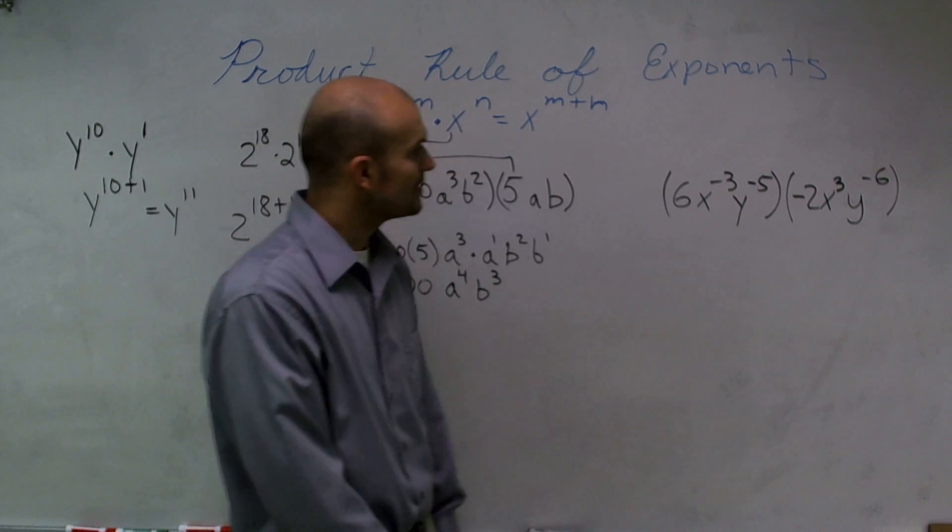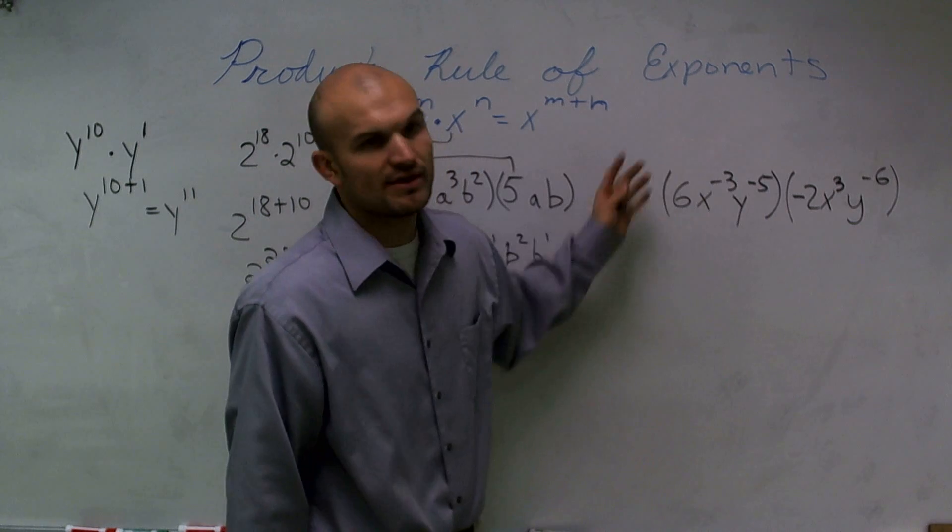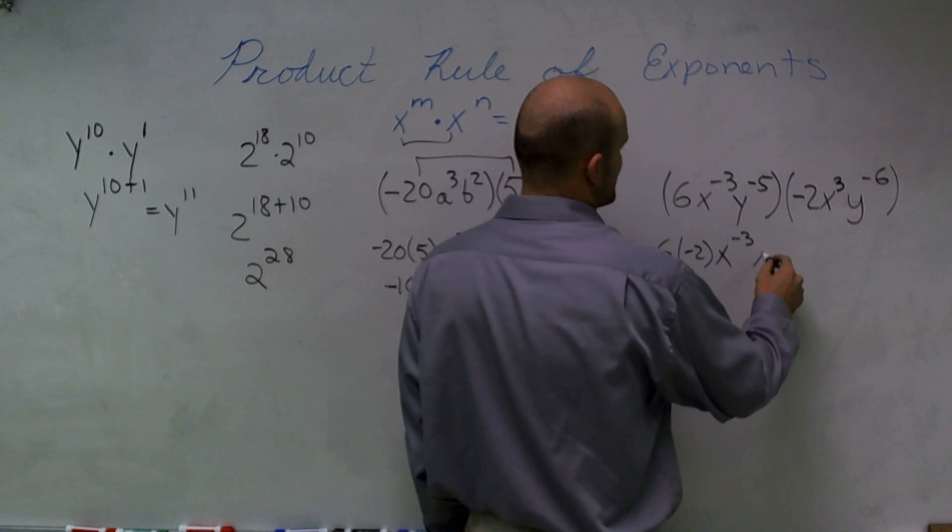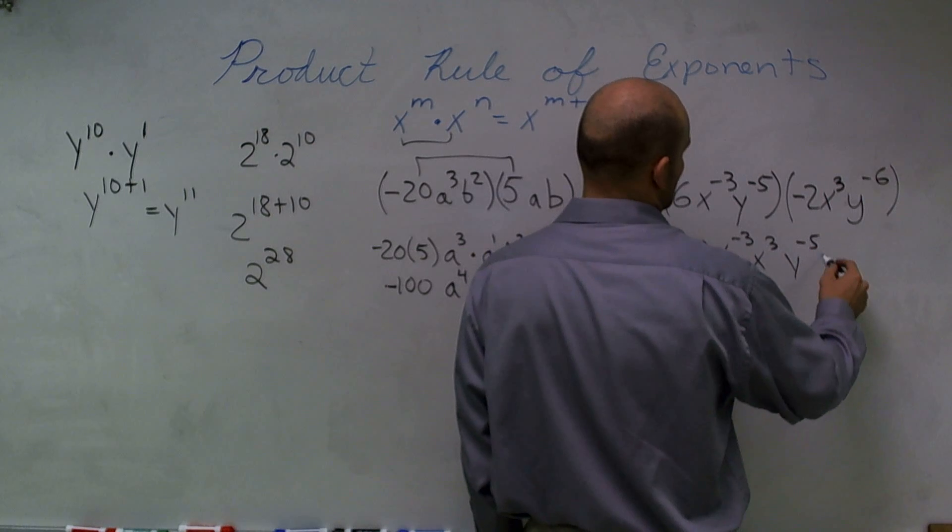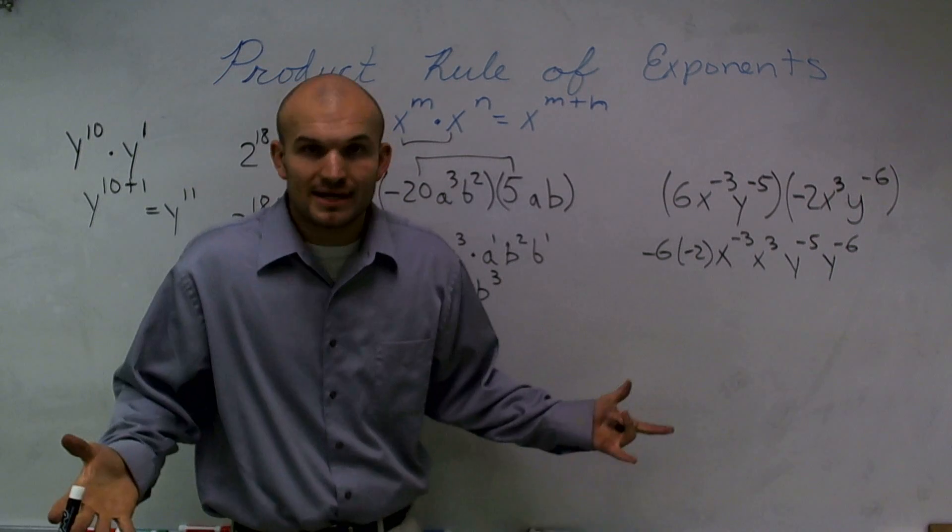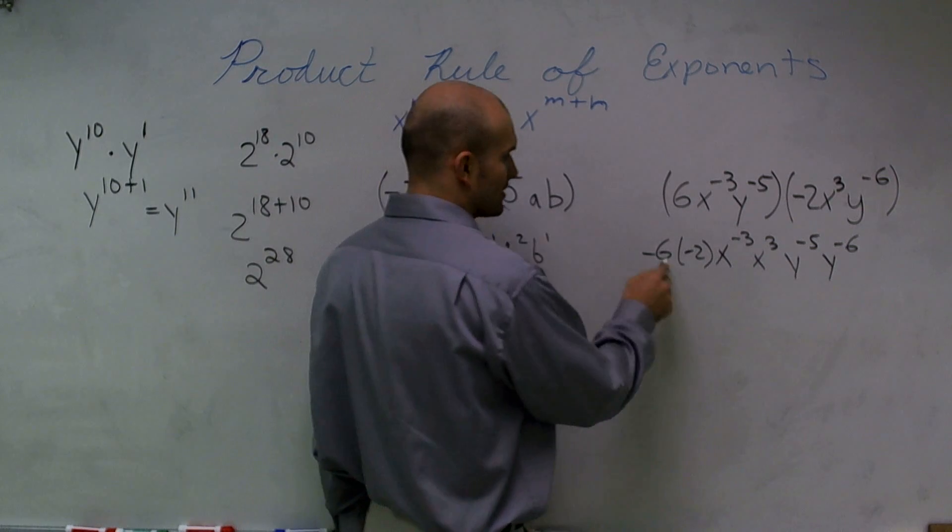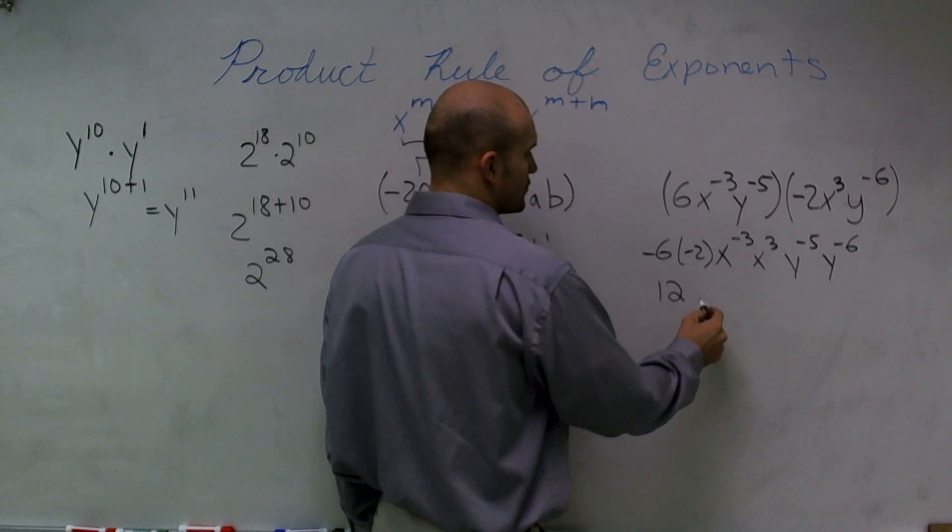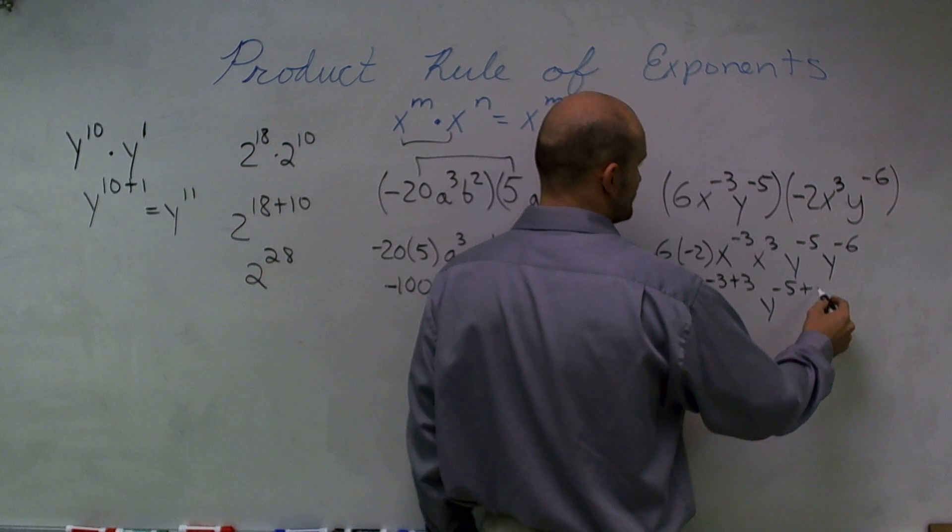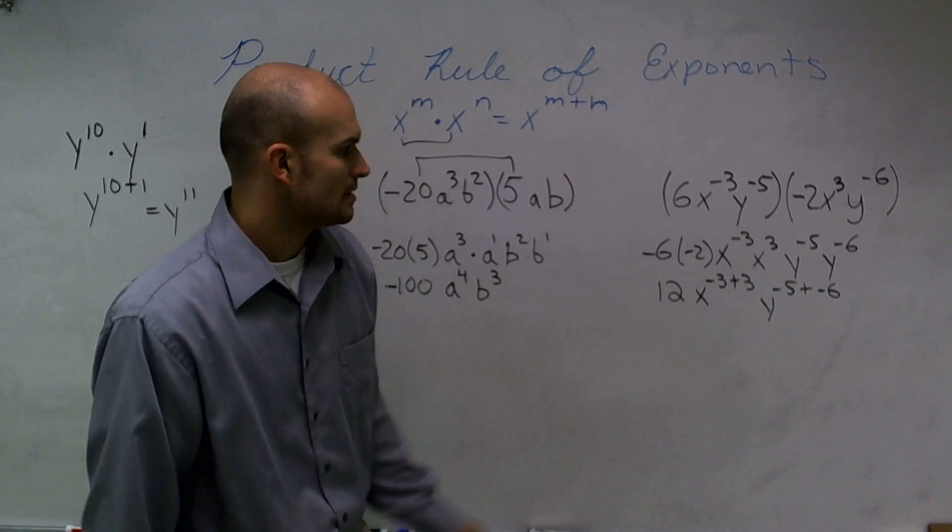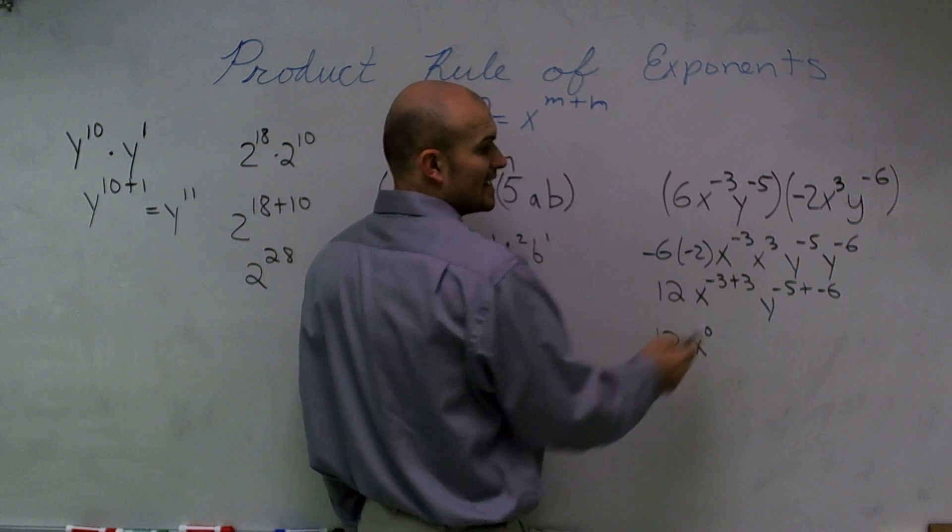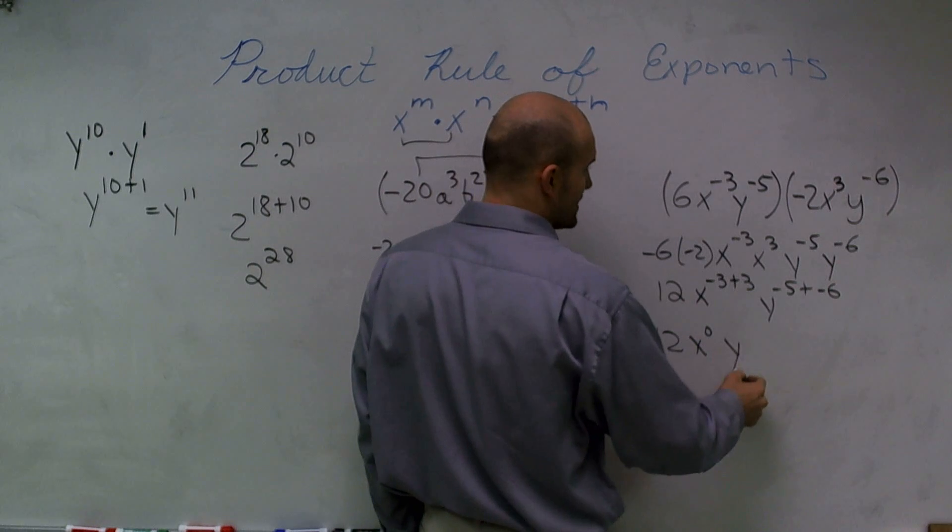Now finally, here's our last one. Here, it's even more difficult. Let's rearrange them first and then take a look at it. So I have 6 times negative 2, x negative cubed, x cubed, y to the negative fifth, y to the negative sixth. So again, now, we still have to do our addition. So I'm actually going to write out this addition so you guys can check my work. Negative 6 times negative 2 is going to be a positive 12. x to the negative 3 plus 3 and y to the negative 5 plus negative 6. Well, 12, x to the negative 3 plus 3 is x to the 0 and y to the negative fifth plus negative 6 is going to be y to the negative 11.